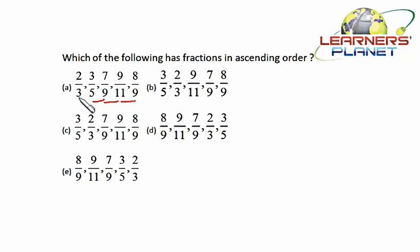Then 5 twos are 10 and 3 threes are 9, that means 3/5 is smaller than 2/3. So 7/9, 9/11, and 8/9 - these three are correct, but 3/5 is smaller than 2/3, so this option is correct.